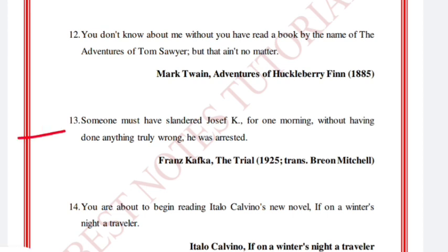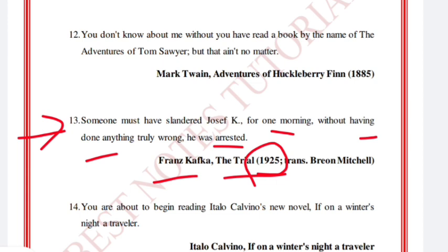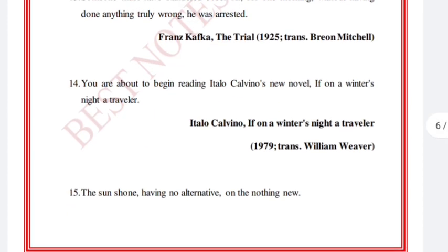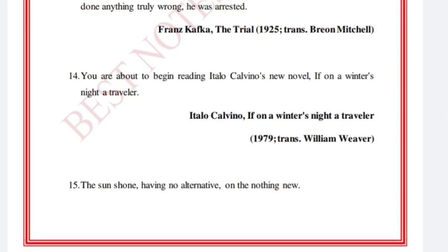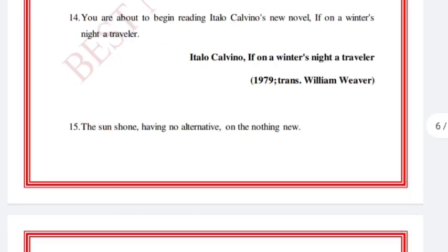'Someone must have slandered Joseph K., for one morning, without having done anything truly wrong, he was arrested.' Franz Kafka, The Trial, 1925. 'You are about to begin reading Italo Calvino's new novel, If on a Winter's Night a Traveler.' Italo Calvino, If on a Winter's Night a Traveler, 1979.